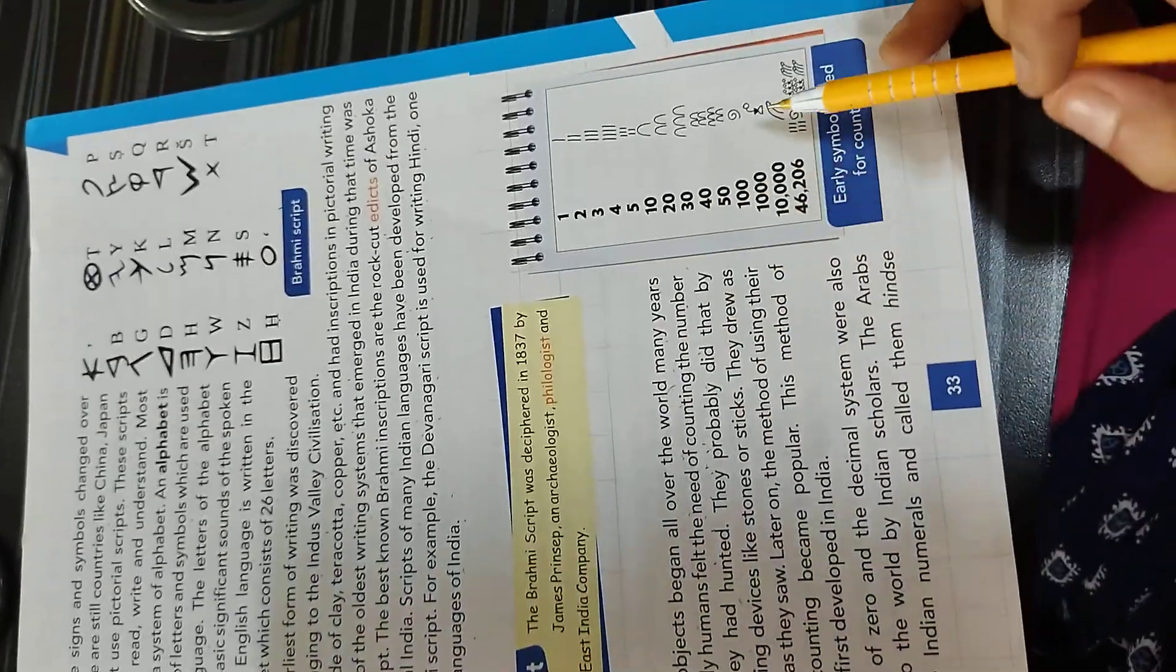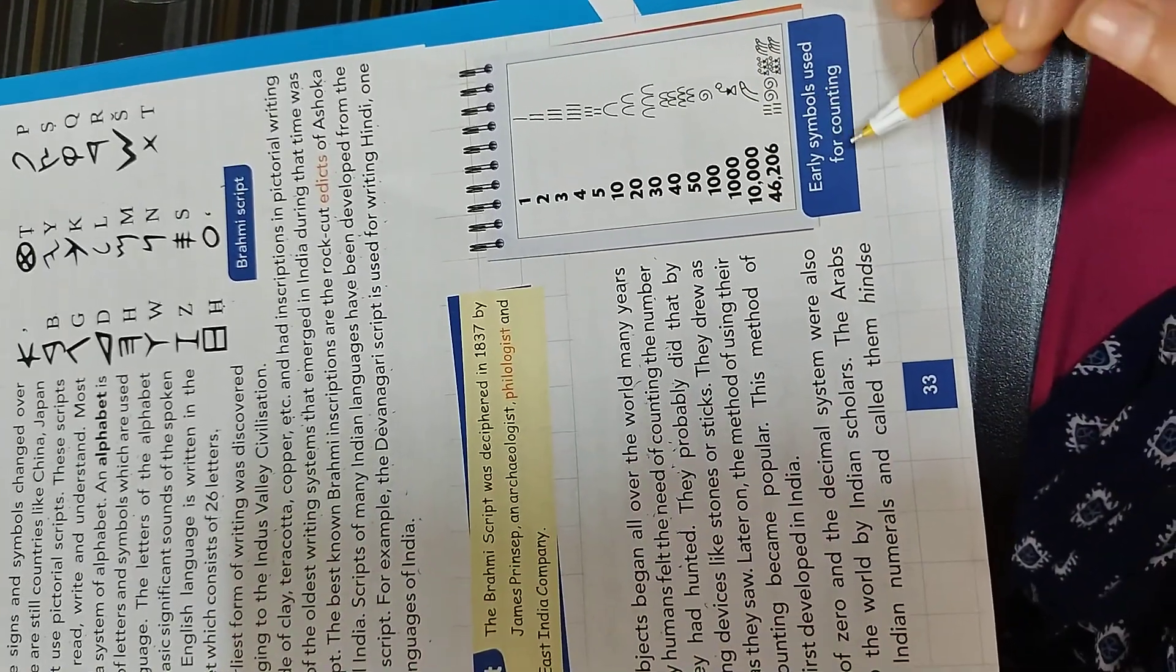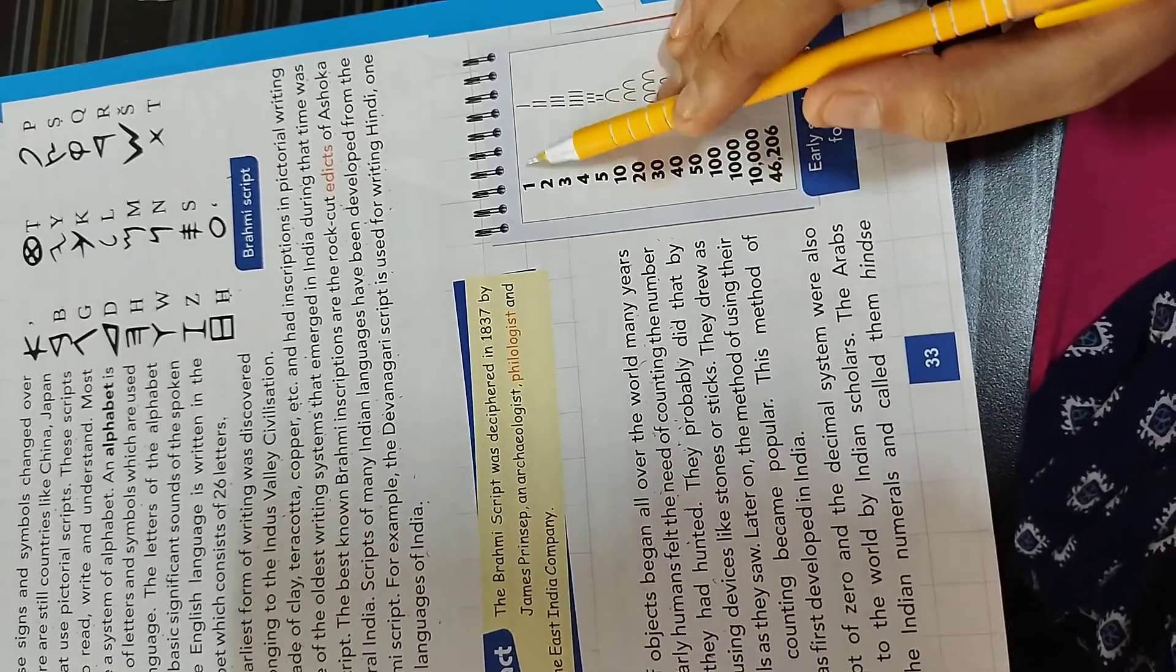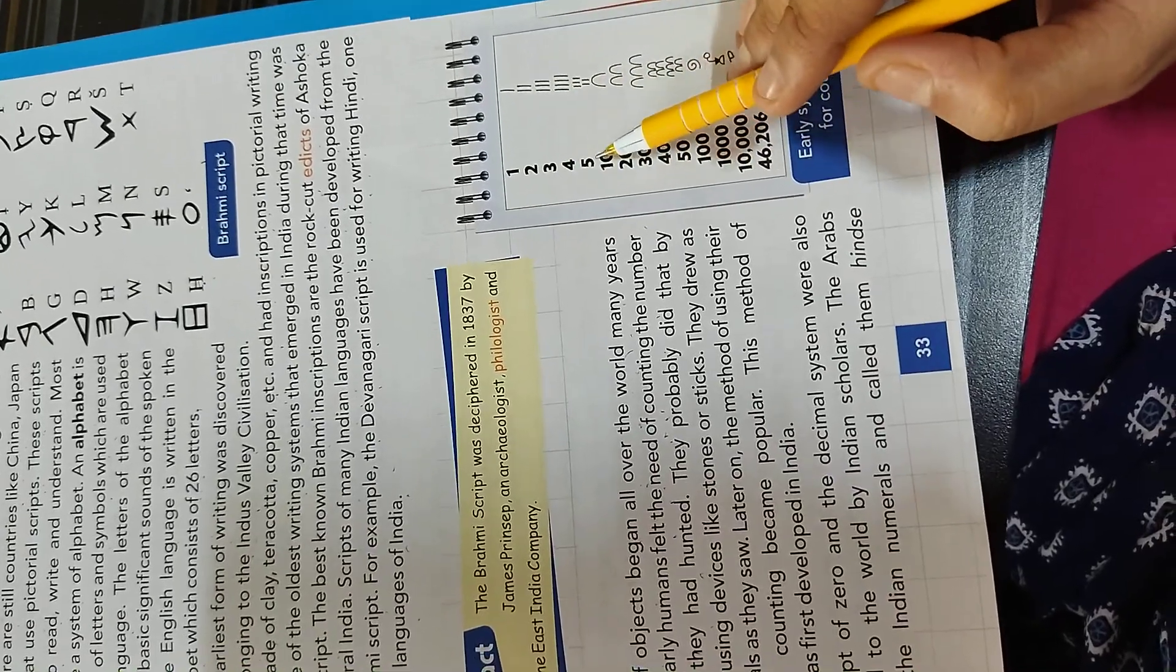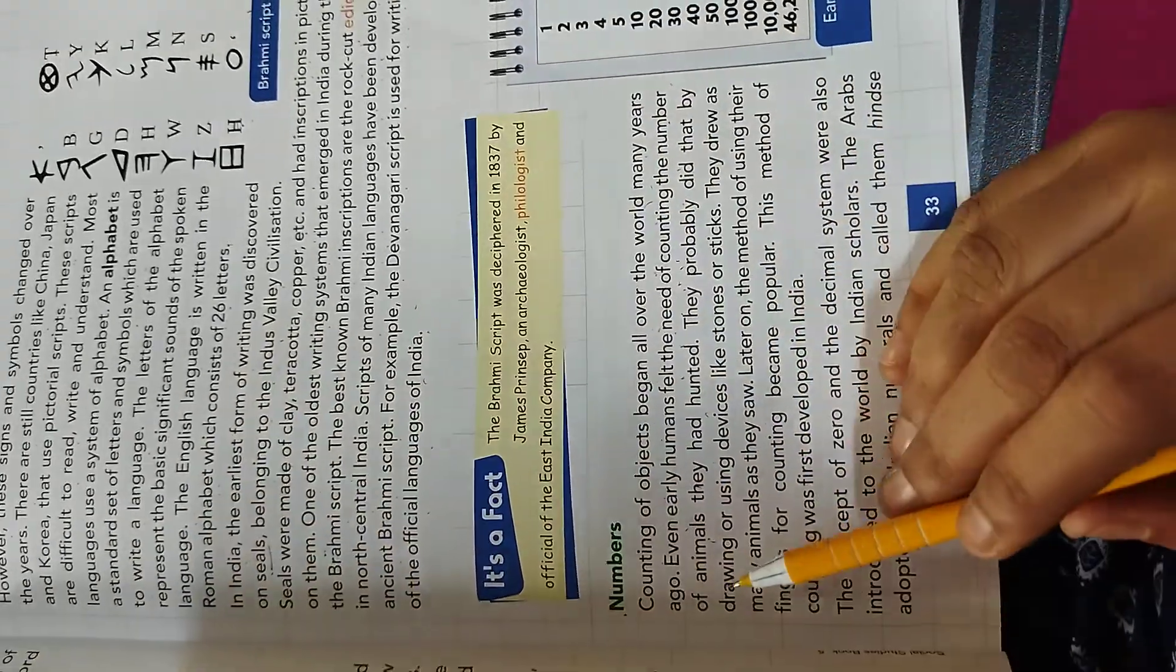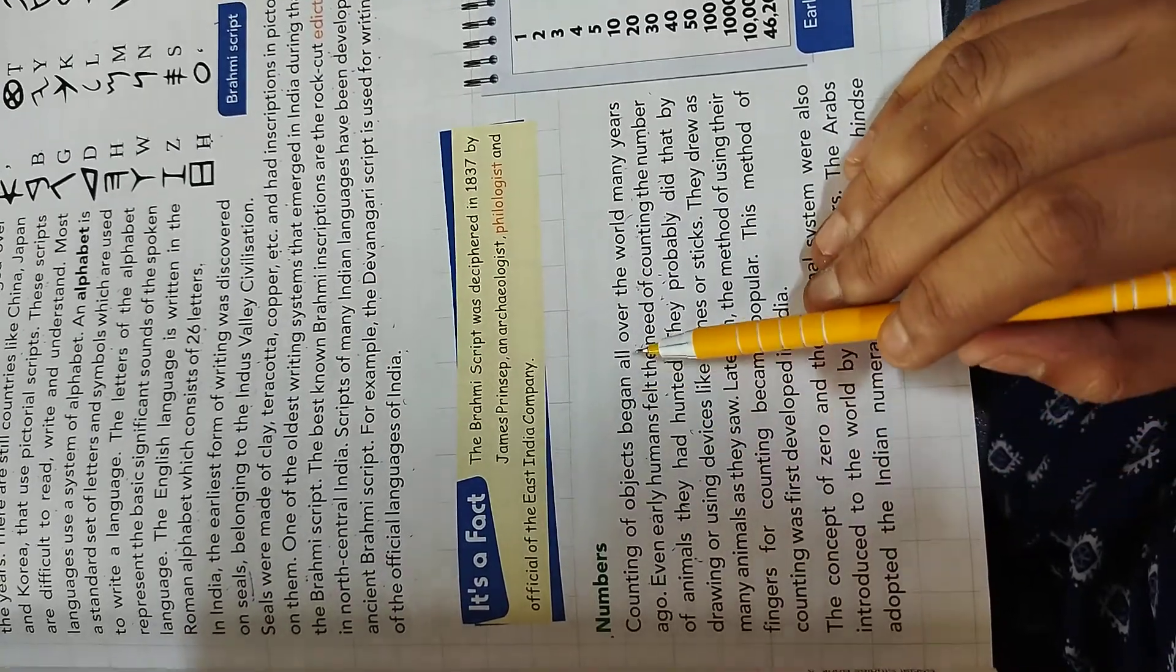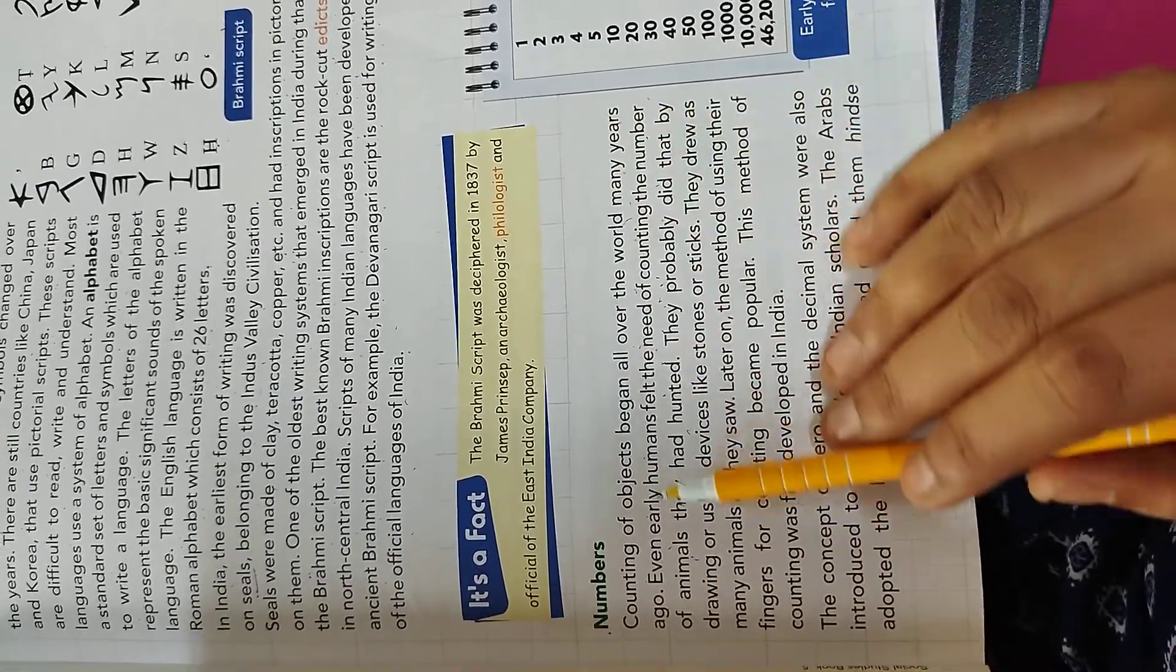Now, our next topic is numbers. And this is the picture of early symbols used for counting. Like this: 1, 2, 3, 4, 5, 10, 20, 30, etc. Counting of objects began all over the world many years ago.